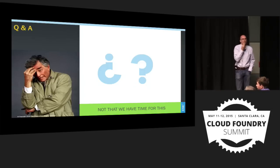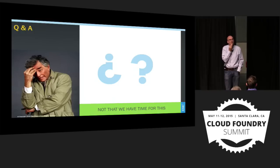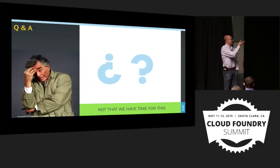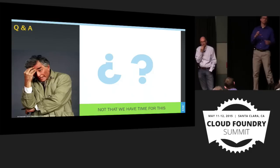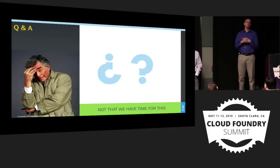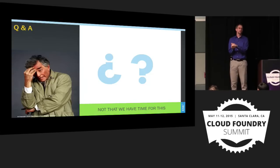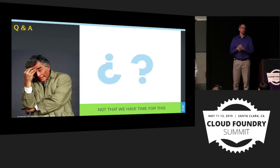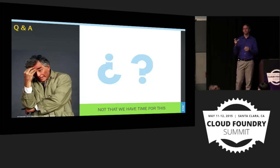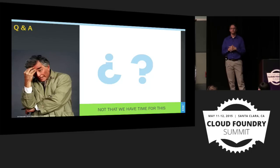Q&A: The stemcell is basically an OS packaged with a BOSH agent so that when you run BOSH deploy it creates VMs with that OS base image, and BOSH can talk to the agent to deploy your software. Essentially, the stemcell is the OS image you want to run. We're running Ubuntu — we just updated to 14.04.